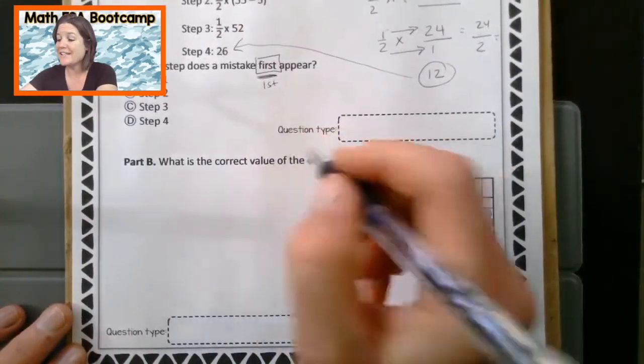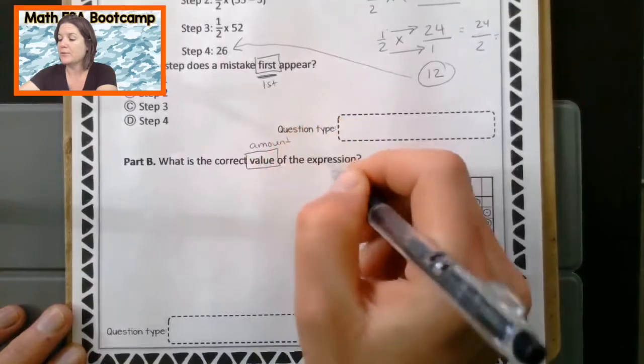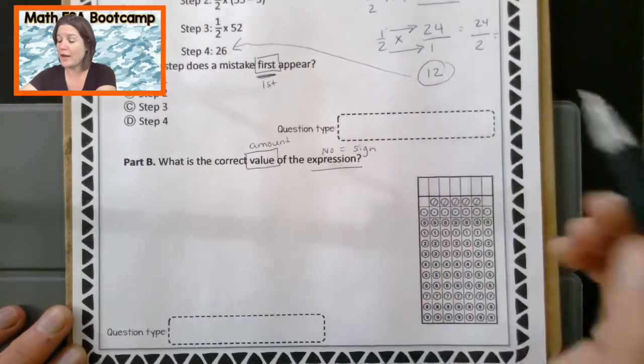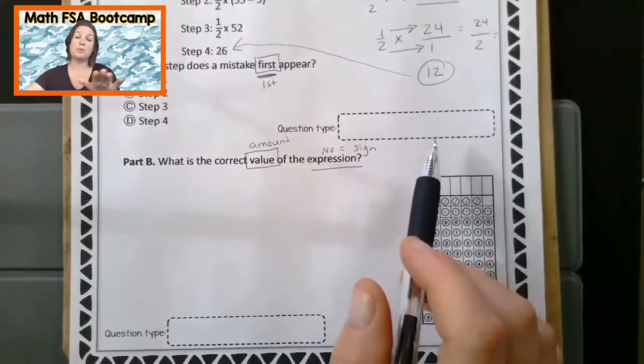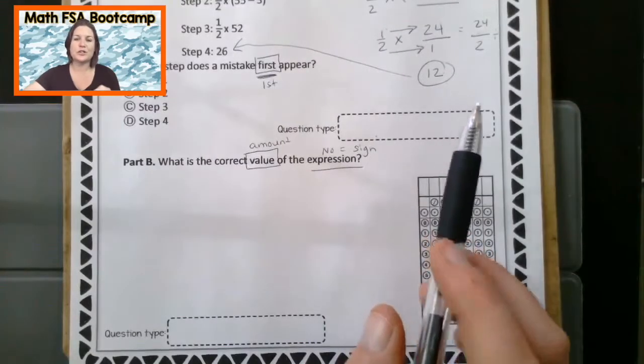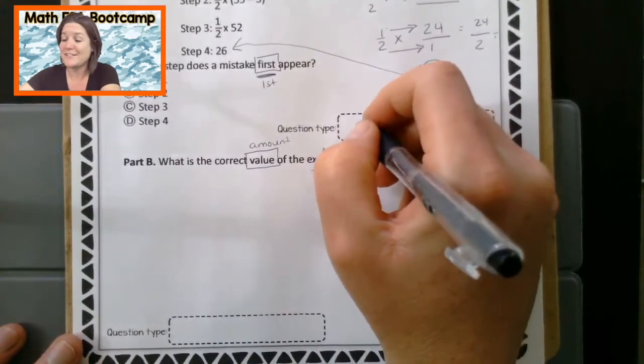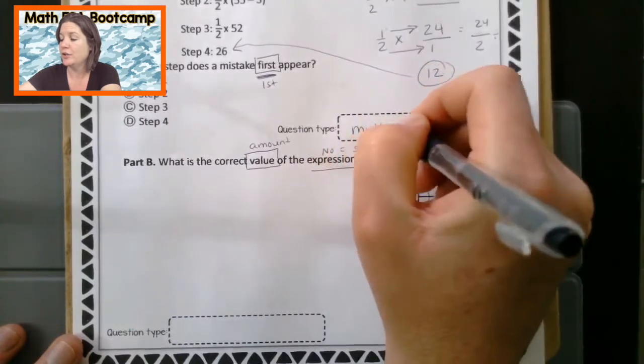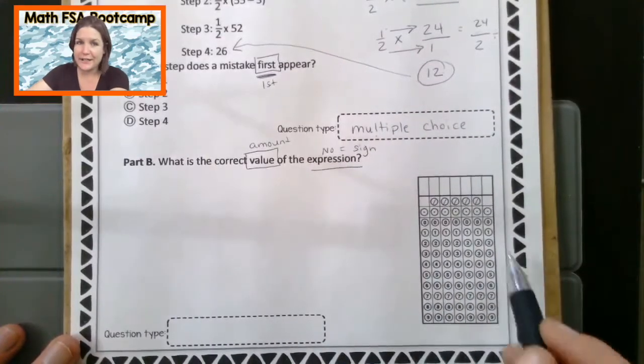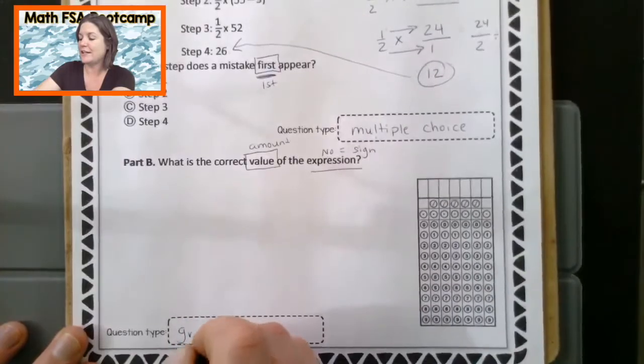Okay. So now this is awesome because it says, what is for part B, what is the correct value? That means the amount, what's the correct amount of the expression? Again, no equal sign there. Well, we solved that, right? We got our answer of 12. And real quick, I need to stop real quick because we forgot, you probably didn't forget. I forgot to jot down the question types. It's really important that you start to understand what kind of questions you're going to see on the FSA. So this question type right here is a what, what do you think it is? It's a multiple choice question. There can only be one correct answer there. And then here I see a grid. Does anybody know what kind of question this is if there is a grid right here? It's a gridded response. Jot that down if you did not already.